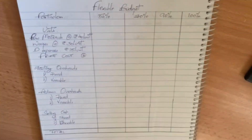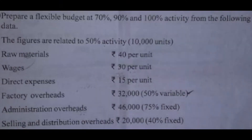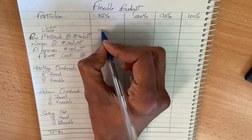For 80% capacity: 80,000 divided by 50 into 80 gives 1,28,000. For 90%: divided by 50 into 90 gives 1,44,000. Variable costs are added to fixed costs to get total expenses. This is our flexible budget. In the next problem, variable costs include raw material, wages, and direct expenses which we will adjust by total units.